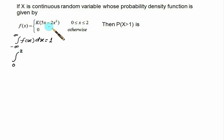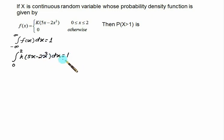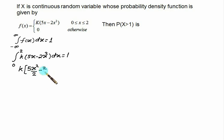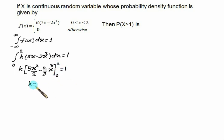We set the integral from 0 to 2 of k(5x − 2x²) dx equal to 1. Taking k common, the integral of 5x is 5x²/2 and of 2x² is 2x³/3, evaluated from 0 to 2. Solving this confirms k ≈ 0.214.